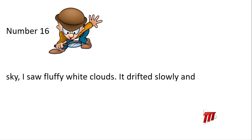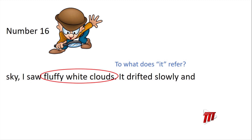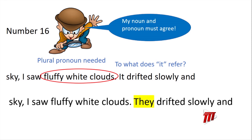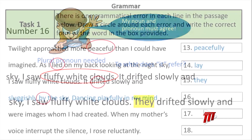Number 15: 'I saw fluffy white clouds. It drifted slowly and...' To what does 'it' refer? It refers to 'fluffy white clouds,' which is plural. Nouns and pronouns must agree — we need a plural pronoun. So: 'I saw fluffy white clouds. They drifted slowly.' The correct answer is 'they.'